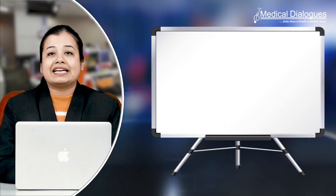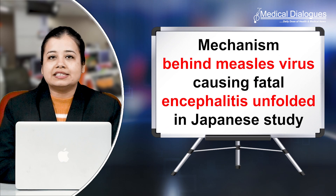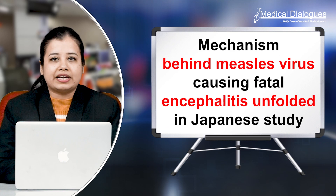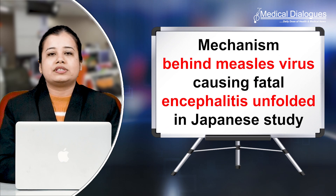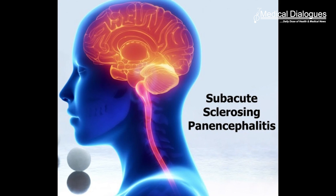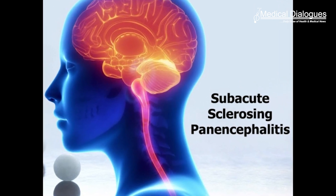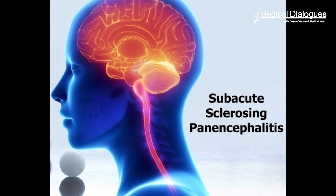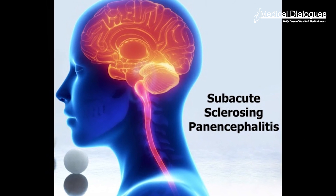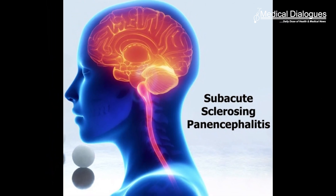Hello and welcome to Medical Dialogues. I'm Mr. Zaman, and today I'm going to talk about the mechanism behind the measles virus causing fatal encephalitis, as unfolded in a Japanese study. Researchers in Japan have uncovered the mechanism for how the measles virus can cause sub-acute sclerosing panencephalitis, or SSPE, a rare but fatal neurological disorder that can occur several years after a measles infection.